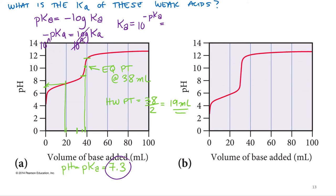And we just found the pKa down here. So 10 to the negative 7.3 equals 5.0 times 10 to the negative eight. That is the Ka.